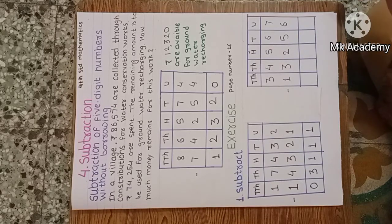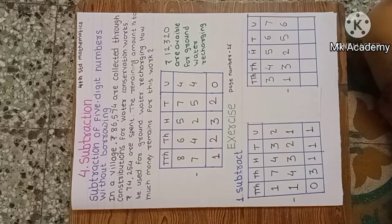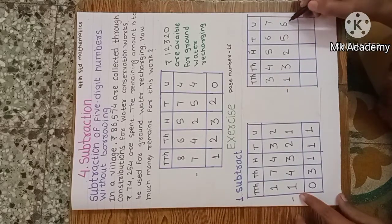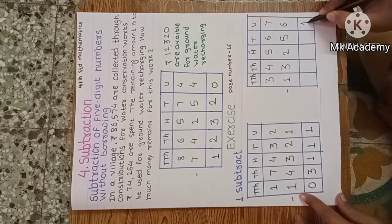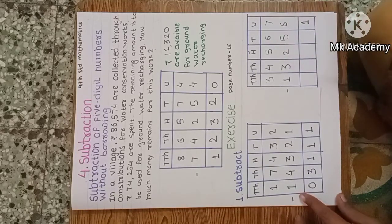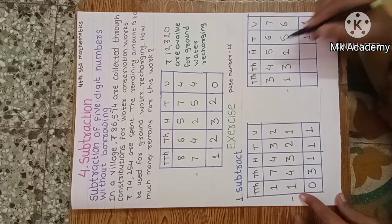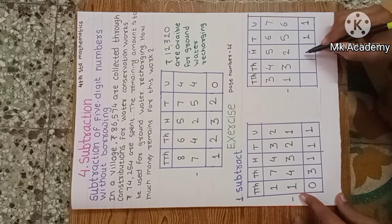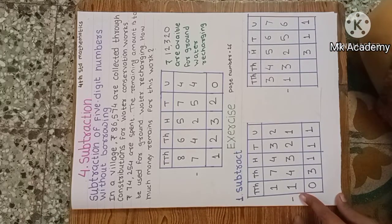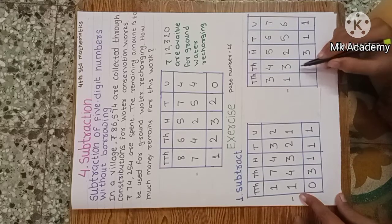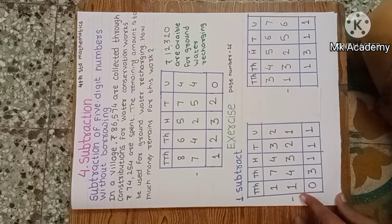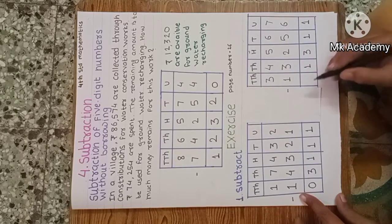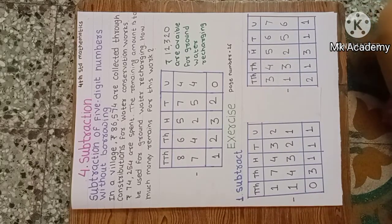Second example: 34,567 minus 13,256. Start from the unit place: 7 minus 6, one unit remaining. Tens: 6 minus 5, one remaining. Hundreds: 5 minus 2, three hundreds remaining. Thousands: 4 minus 3, one thousand remaining. Ten thousands: 3 minus 1, two remaining. The answer is twenty-one thousand three hundred and eleven.